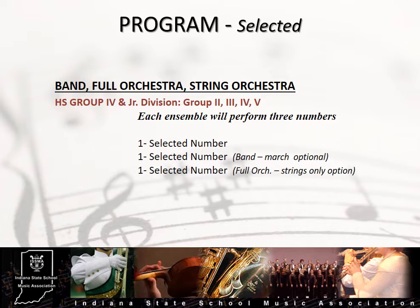Group 4 High School and Groups 2, 3, 4, and 5 JME have suggested lists of music appropriate for that group level. Ensembles may or may not perform pieces from these lists. Due to the lack of a required list for these groups, it is requested that you do not determine the rating of an organization based on your belief that a composition is not appropriate for a given group designation. Bands entering one of these group levels may perform a march as one of their selected pieces, and full orchestras may perform one selection for strings only.